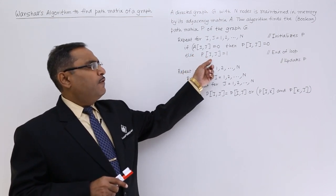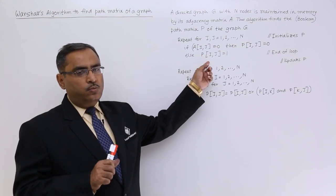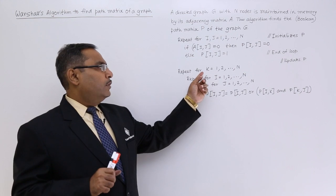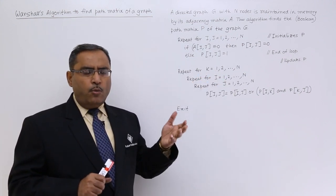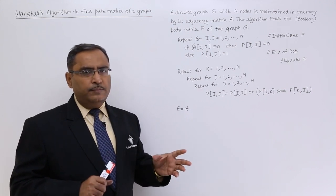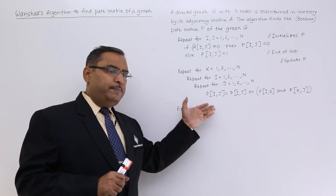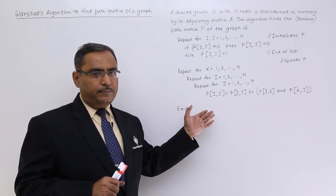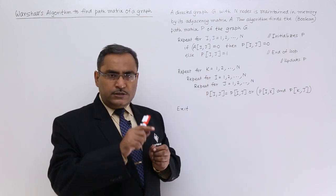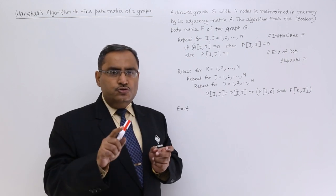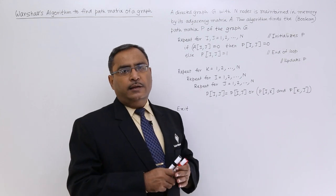From the adjacency matrix, we are forming this path matrix, very initial path matrix. It is not the answer to be returned by Warshall's algorithm. Now, for k equals 1 to n—just look at the previous video where we discussed Floyd's algorithm to find the cost matrix of a given graph. We are doing the same here, but here it is not cost, but it is a path matrix. What will happen? k is denoting through—that is through 1, through 2, through 3, and so on up to through node n.